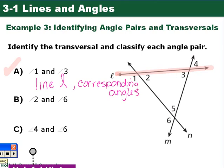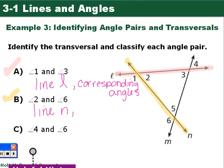The next set of angles is angle 2 and angle 6. Angle 2 and angle 6 both share line N, so line N is our transversal. They're on opposite sides of the transversal and inside the two lines, so that makes them alternate interior angles.